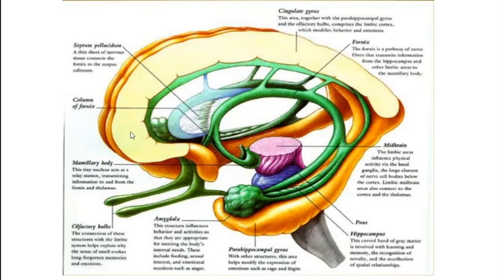In this diagram, you can see the cingulate gyrus and below it the corpus callosum. Below the cingulate gyrus is a nerve pathway called the fornix. Also visible are the septum pellucidum, the midbrain, and anteriorly the olfactory bulb extending backwards, the mammillary bodies, the parahippocampal gyrus, amygdala, dentate gyrus — all forming the hippocampal formation and relating to the pons as well.